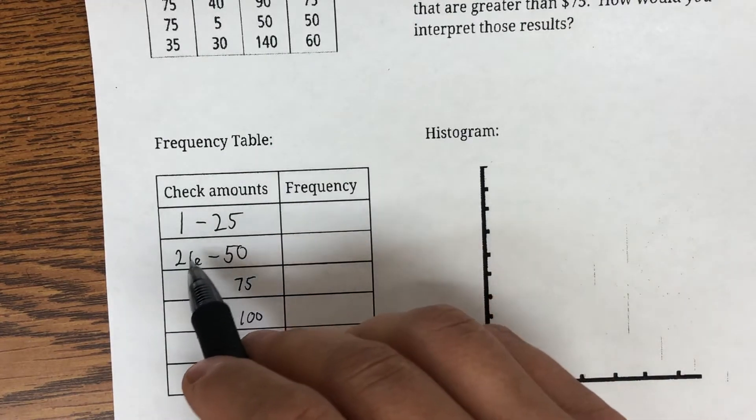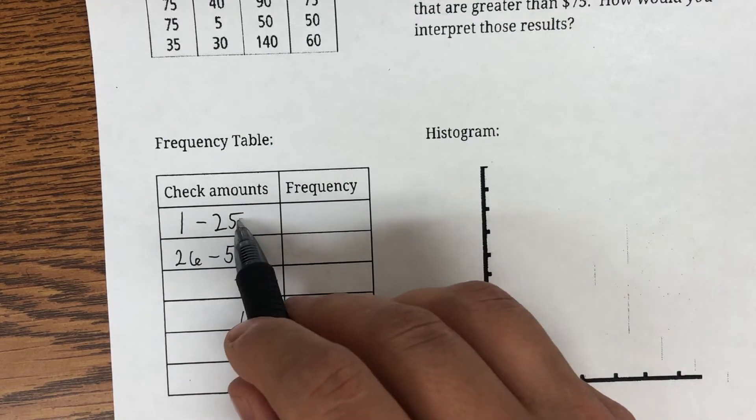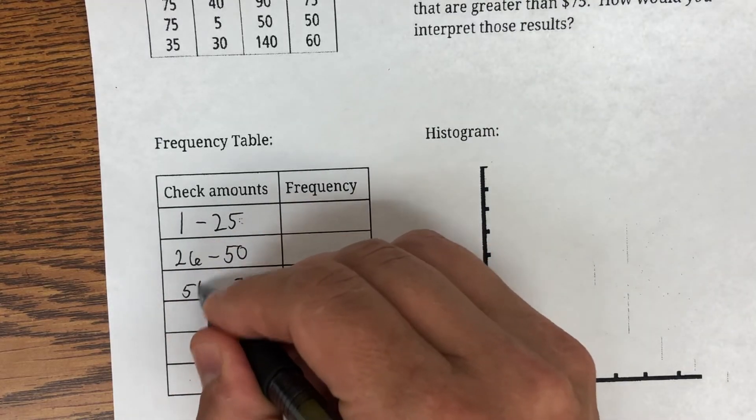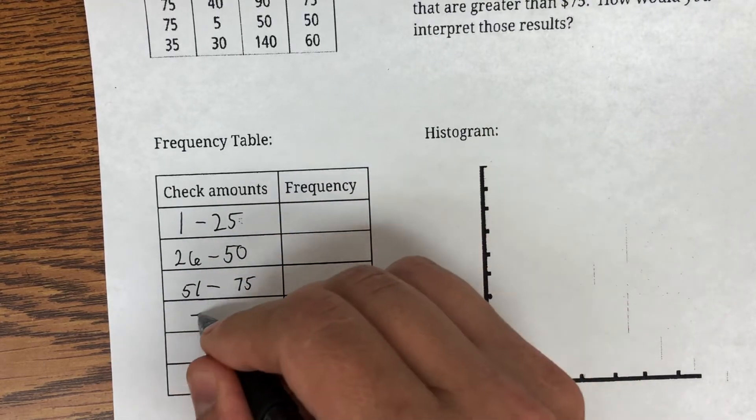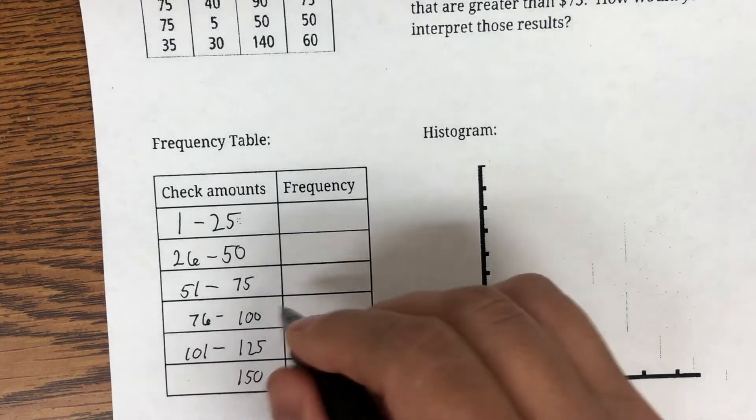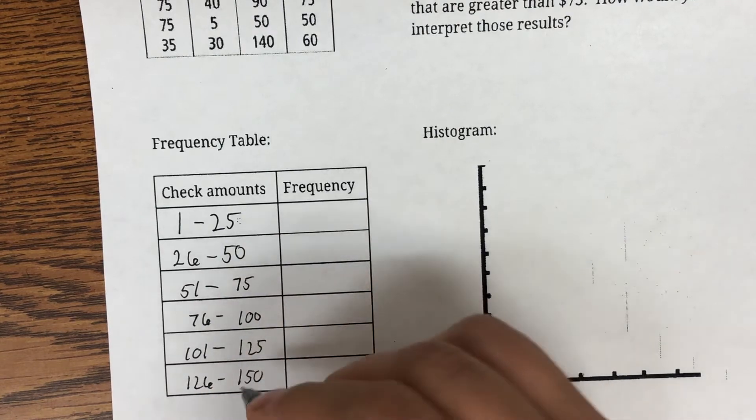$1 to $25. Now, I had to go up by $1 because $25 is included here, so I have $26 to $50. So, over here, $51 to $75, $76 to $100, $101 to $125, and $126 to $150.